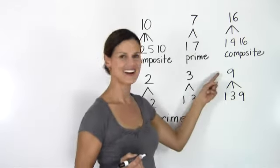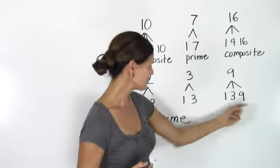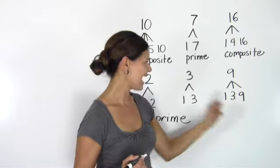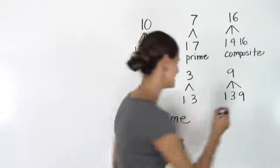And 9, our last example here, has three factors: 9, 1, and 3, making it a composite number.